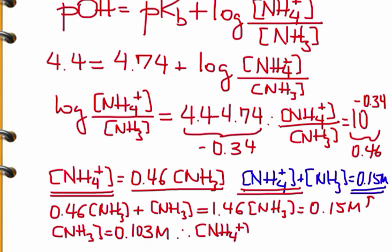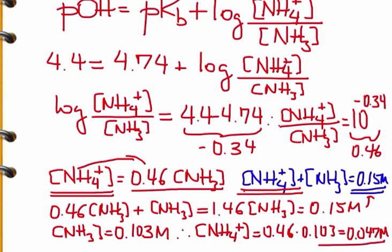The concentration of ammonium, based on the other equation, is 0.46 times 0.103. So we have finally [NH4+] = 0.047 molar. That's how we approach this buffer problem to calculate the concentrations of the species involved.